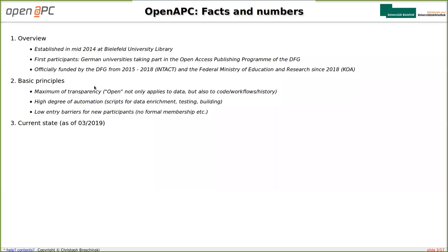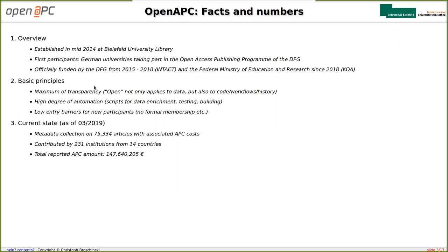Now something on our current state as of this month. Our current metadata collection consists of more than 75,000 articles with associated APC costs, contributed by 231 institutions from 14 different countries. The total reported APC amount is nearly 150 million euros. Even if the points on the first slide didn't convince you why OpenAPC is important, this number should — because there's a whole load of money involved in the scientific publishing market, and lots of this money is now shifting to APC payments from subscription fees.